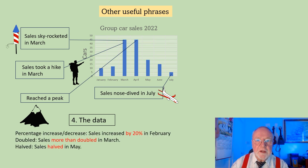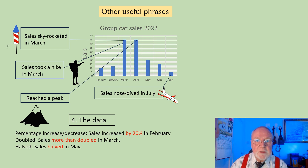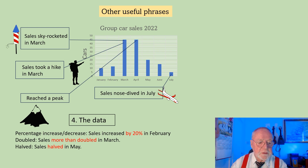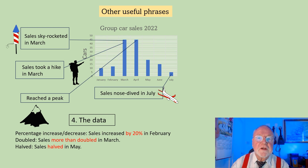It's important to talk about the data in a graph so you can draw conclusions from the figures that you see. For a percentage increase or decrease: 'Sales increased by 20 percent in February.' Doubled: 'Sales more than doubled in March.' Halved: 'Sales halved in May.' You have to study the figures fairly closely to draw those conclusions.